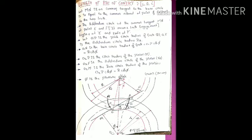This is called pitch point P. Here let MN be the common tangent — they draw one common tangent between these two gears. This is the tangent line passing through the base circles. The upper one is the gear, the bottom one is the pinion. The pinion is the driver and the gear is the driven member; when the pinion rotates, the gear rotates.